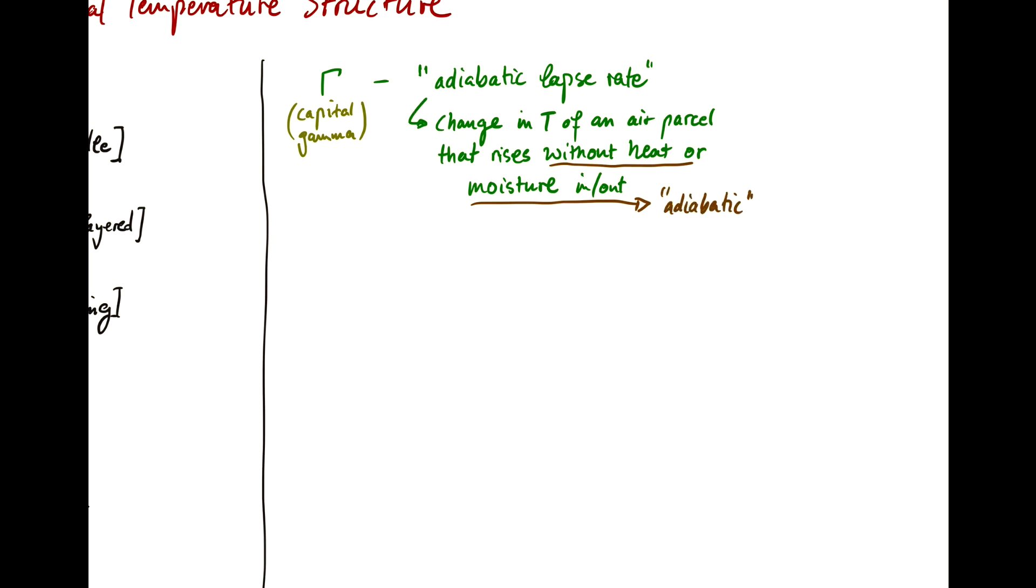Now gamma is defined as acceleration due to gravity g divided by specific heat cp. What does specific heat mean? It's the energy that's needed to increase one kilogram of air by one kelvin. For example, for dry air, the specific heat of air is about one kilojoule per kilogram per kelvin. You have to put in one kilojoule to raise a parcel of air that weighs one kilogram to raise its temperature by one kelvin.